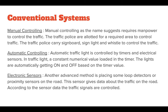So what kind of traffic light systems are used currently? There are three types of systems being used. First, manual controlling. As the name suggests, this requires manpower to control the traffic. Traffic police are allotted for a required area to control traffic using sign boards, whistles, and sign lights. The second one is conventional traffic lights, which are controlled by fixed timers. A constant numerical value is loaded in the timers and the lights are automatically switched to red and green based on the timer value.